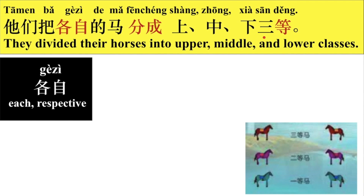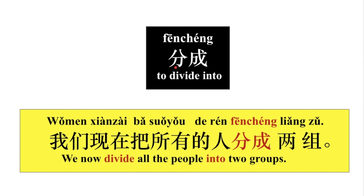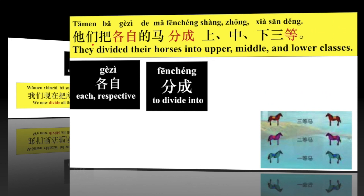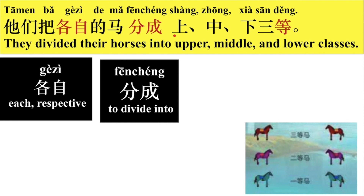分成。好，我们来看一个例子：我们现在把所有的人分成两组，组就是group。他们把各自的马分成上、中、下三等。好，那上等的马是非常好的马，中等的马不如上等的马。